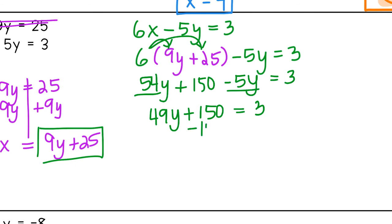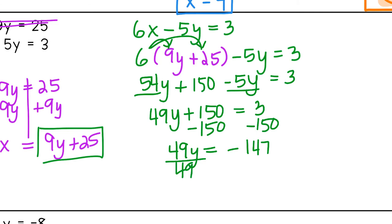Subtract 150 from both sides: 49y equals negative 147. Divide by 49 to get y by itself: y equals negative 3.